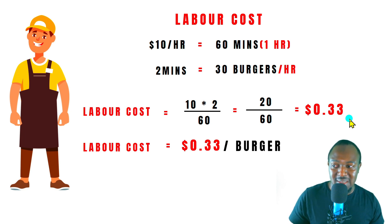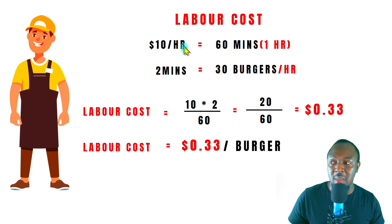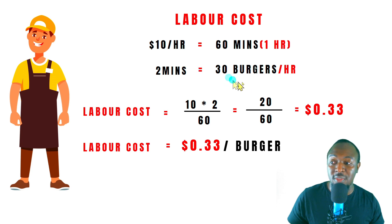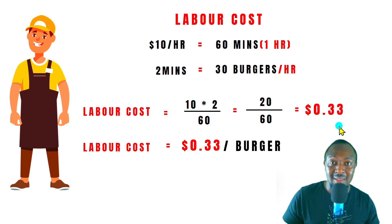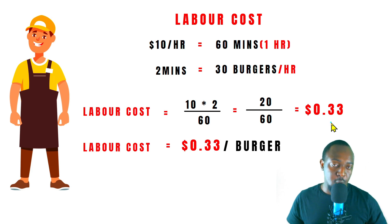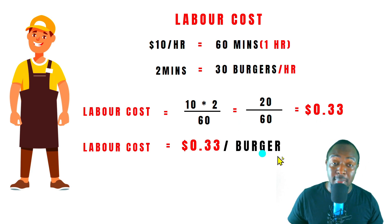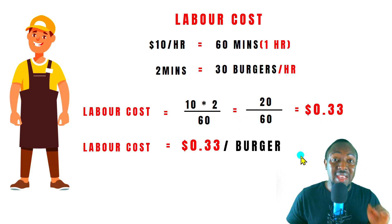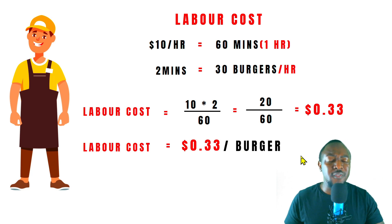Does that make sense? So every burger I make per hour — McDonald's is paying me $10 per hour — and in that $10, I make 30 burgers per hour. So for each burger, it's costing McDonald's 33 cents for me to produce one burger. This is the labor cost. It's really easy and simple.